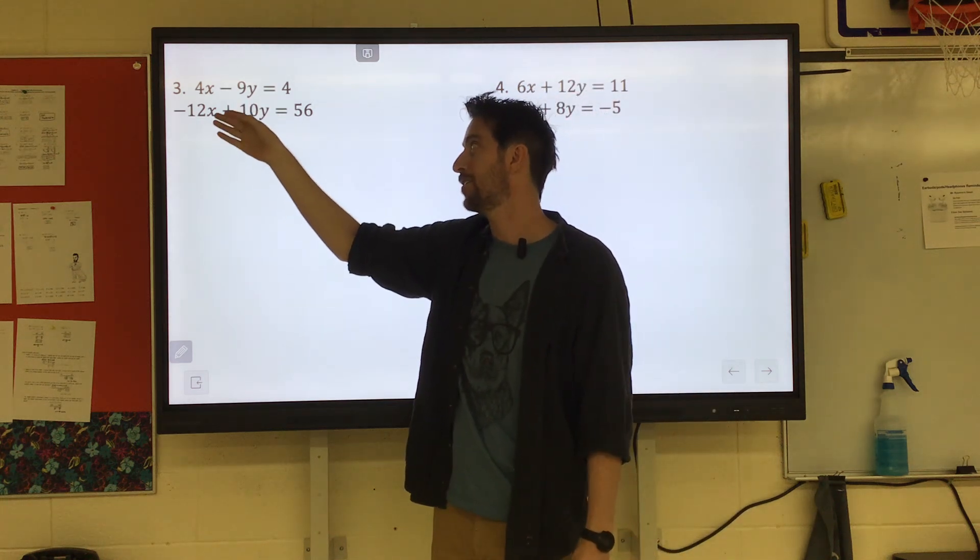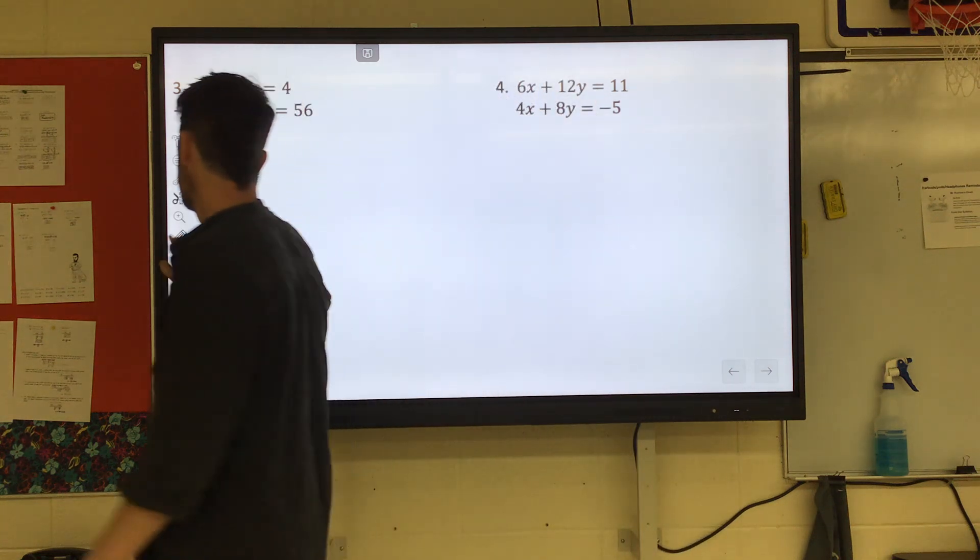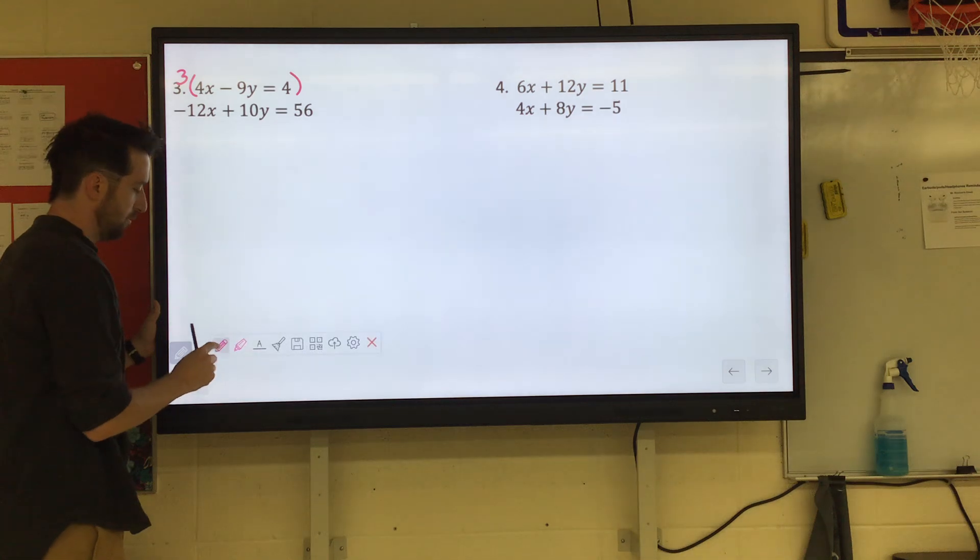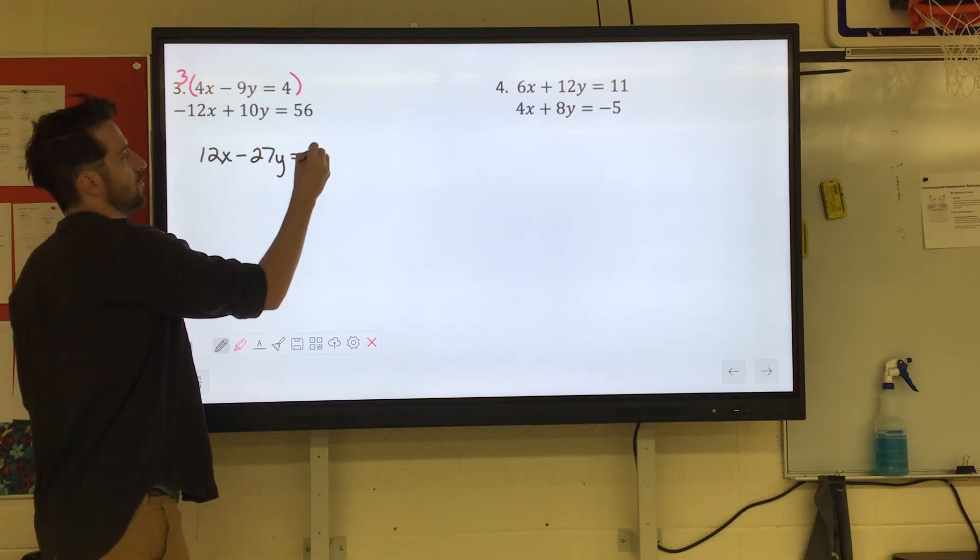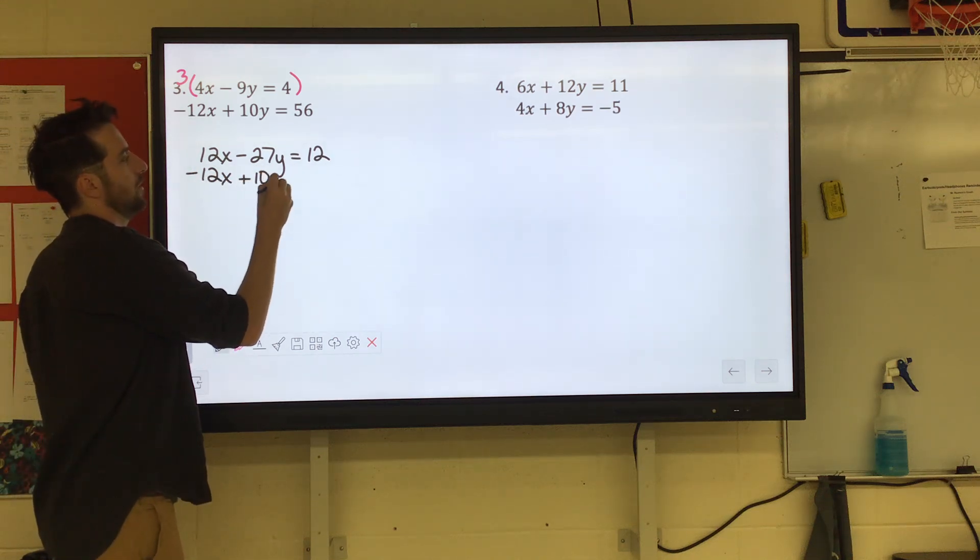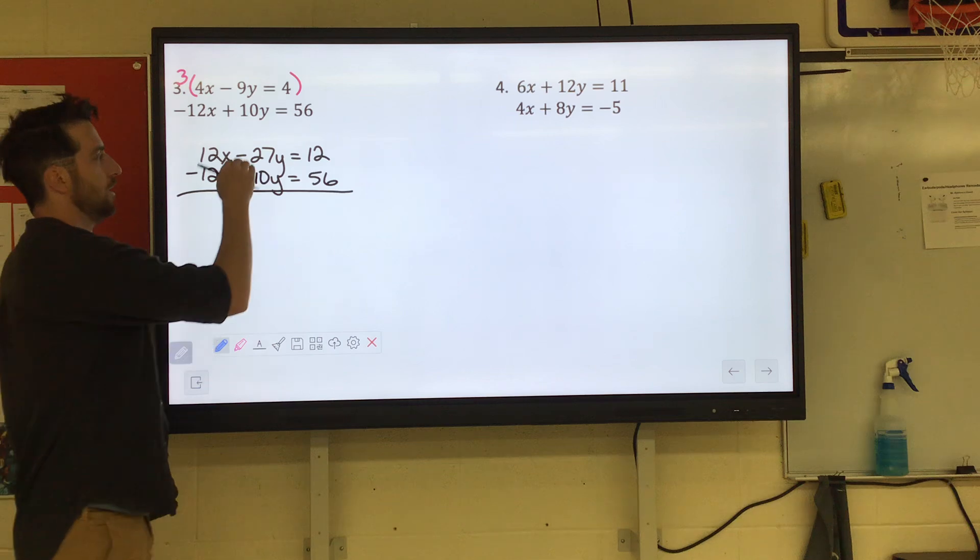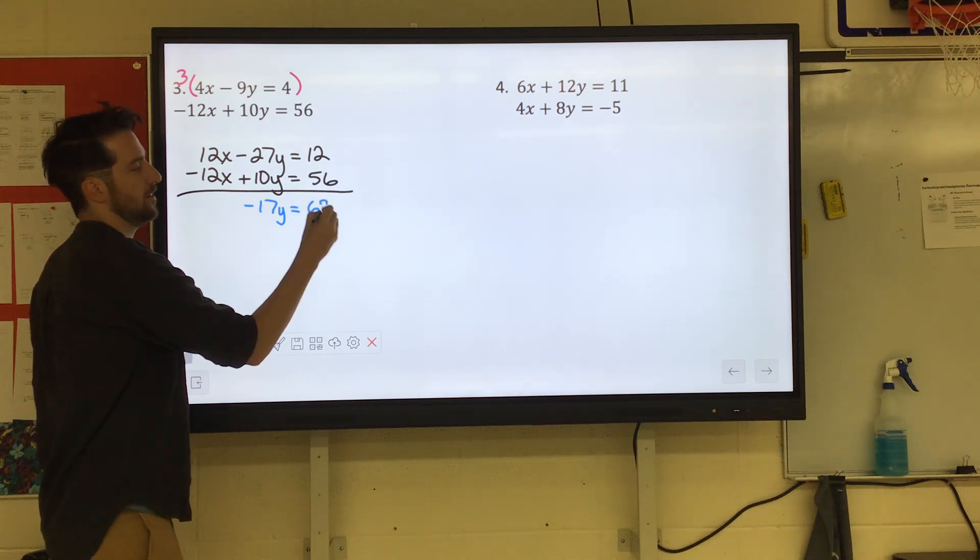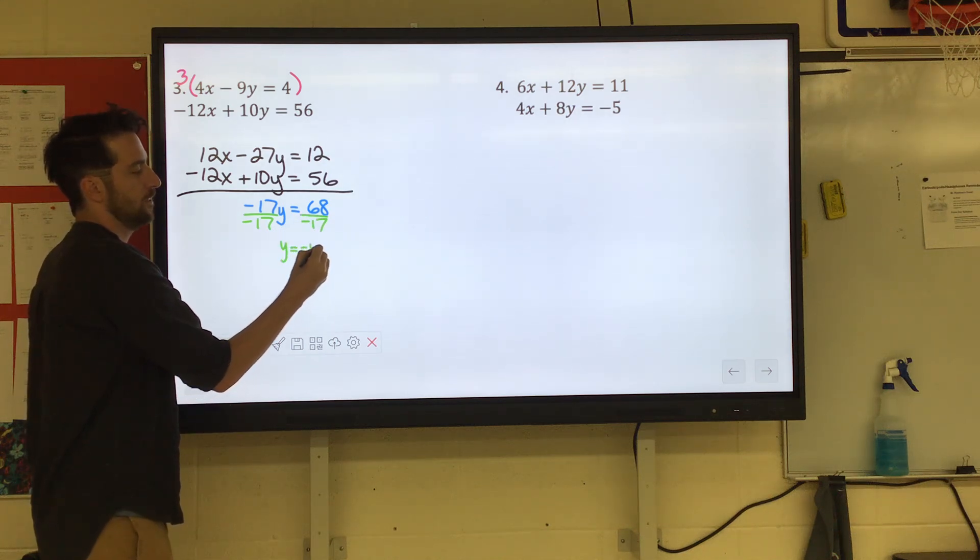So we could just get away with multiplying the first equation by 3. But you got to multiply everything in the equation by 3. So if we did 3 times this whole line, it would be 12X minus 27Y equals 12. I'm going to rewrite the second equation right underneath this. Negative 12X plus 10Y equals 56. So now our X's are going to cancel out. Our Y is negative 27 plus 10 is negative 17Y. And then 12 plus 56 is 68. So simple step, divide by negative 17, and we get Y equals negative 4.